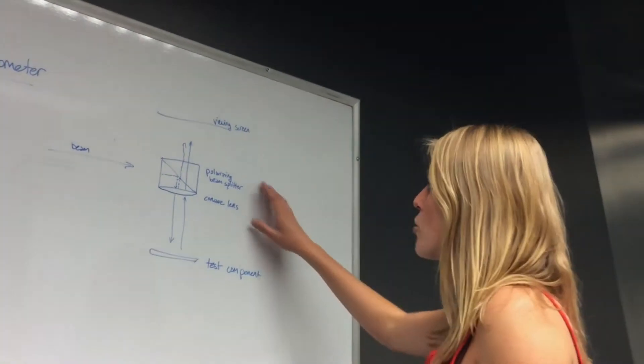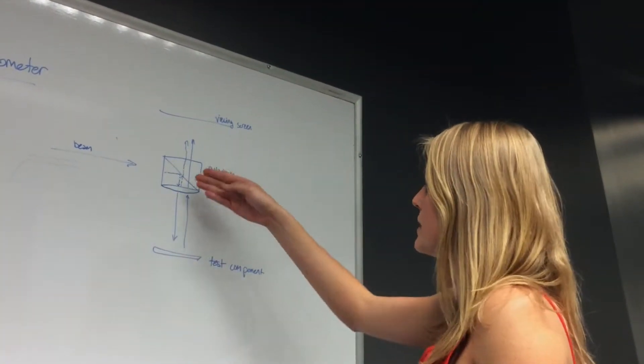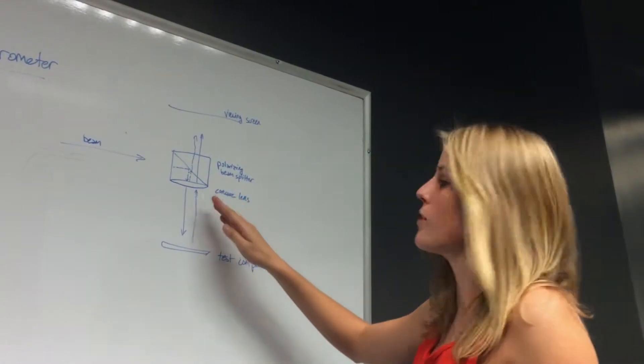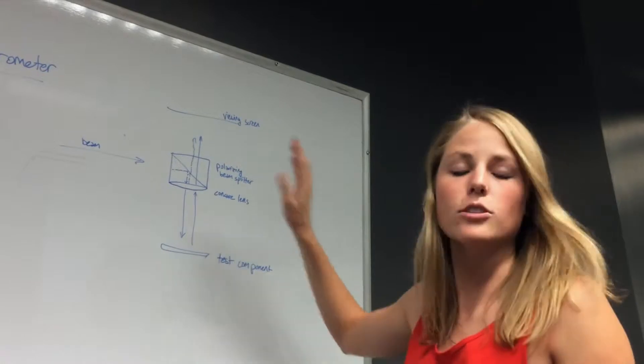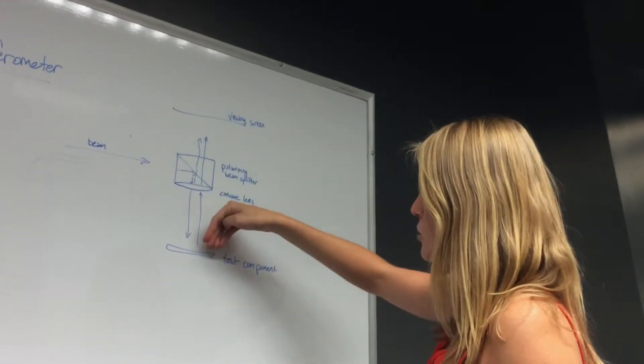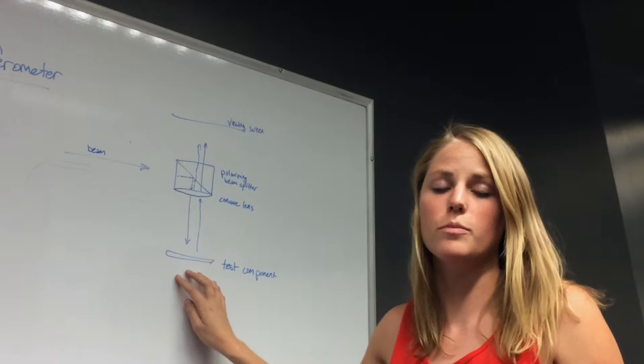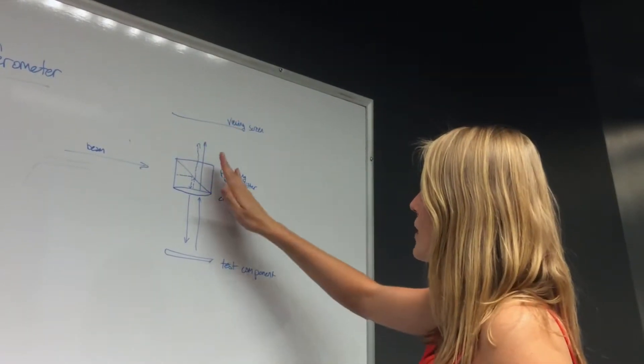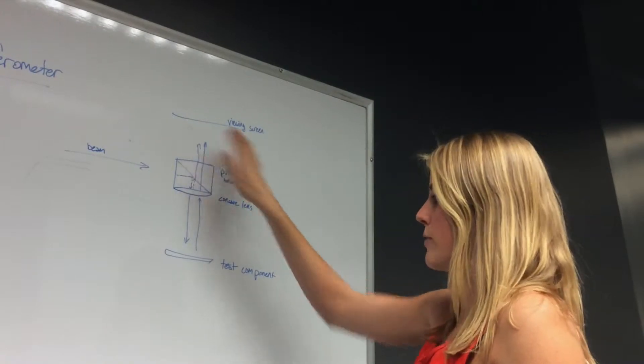So our Shack cube interferometer has this polarizing beam splitter. Our incoming beam splits here, reflects this way. It hits this concave lens. Now, about 4% of the light is reflected towards our viewing screen. That's our reference wavefront with no aberrations. The rest of the light passes through the lens. It hits our test component, which could be a lens or a mirror, and then it comes back through the lens, through the polarizing beam splitter, and interferes with our reference wavefront on the viewing screen.